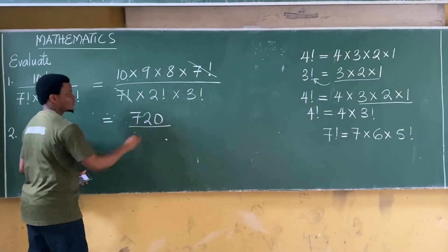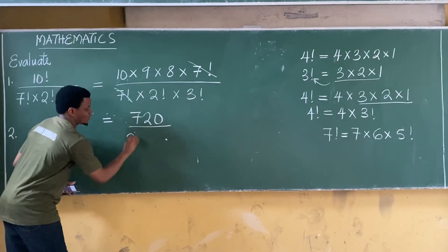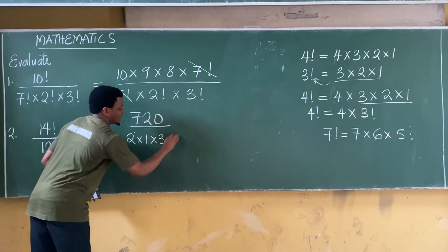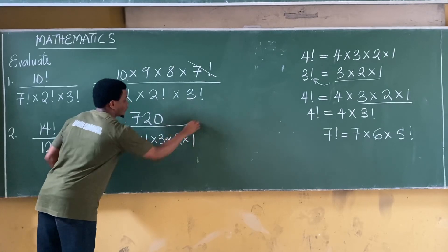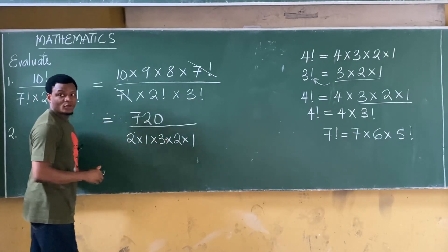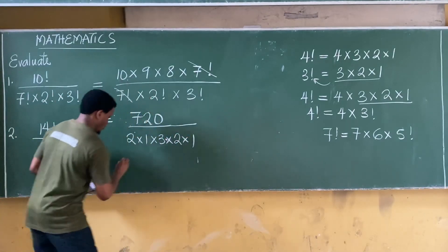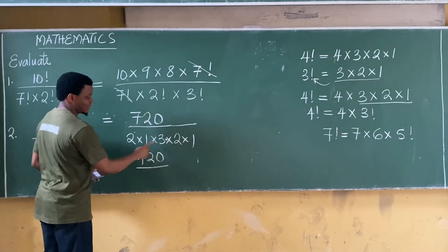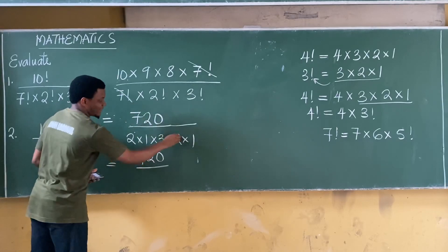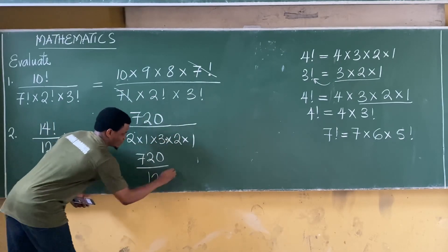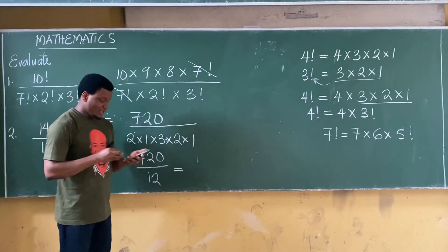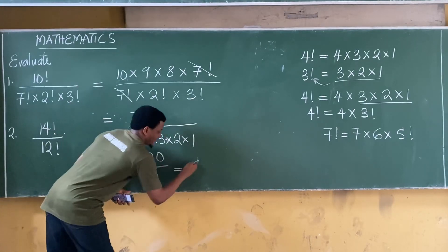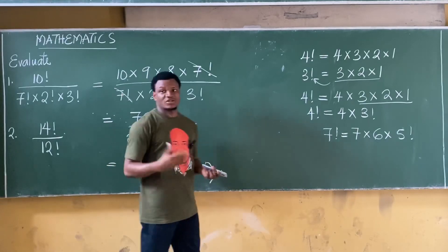10 times 9 times 8 gives you 720, all over 2 factorial which is 2 times 1, multiplied by 3 factorial which is 3 times 2 times 1. Working on this: 2 times 1 is 2, times 3 is 6, times 2 is 12. So we have 720 over 12, and 720 divided by 12 gives an answer of 60.